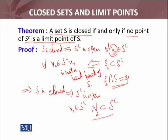If this doesn't happen, then what will happen? The intersection of every neighborhood with S will be non-empty, so x naught will become a limit point.